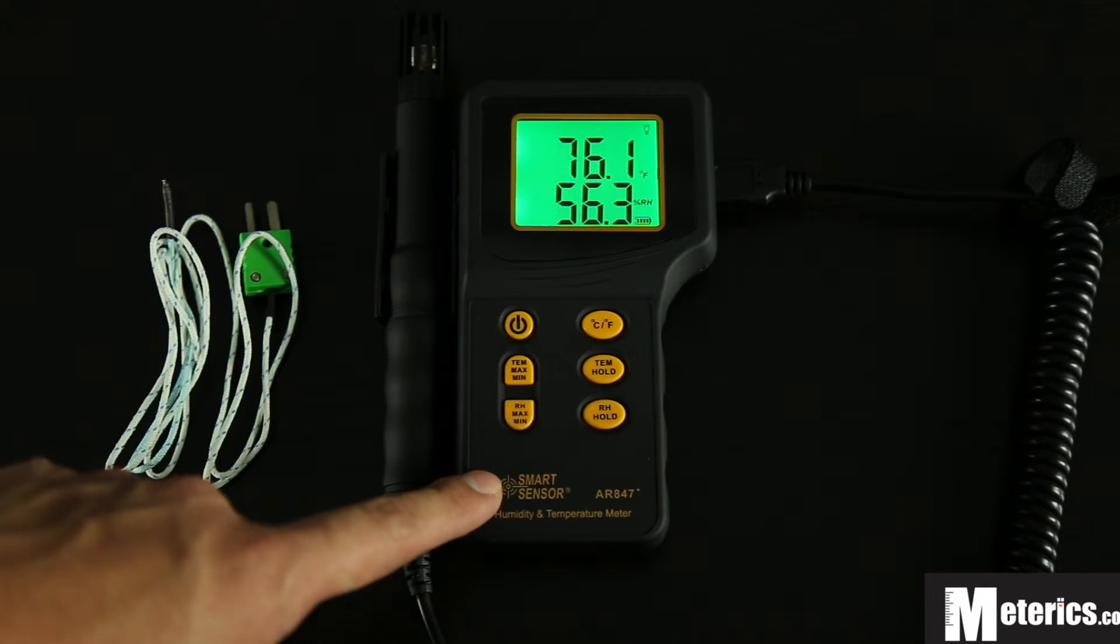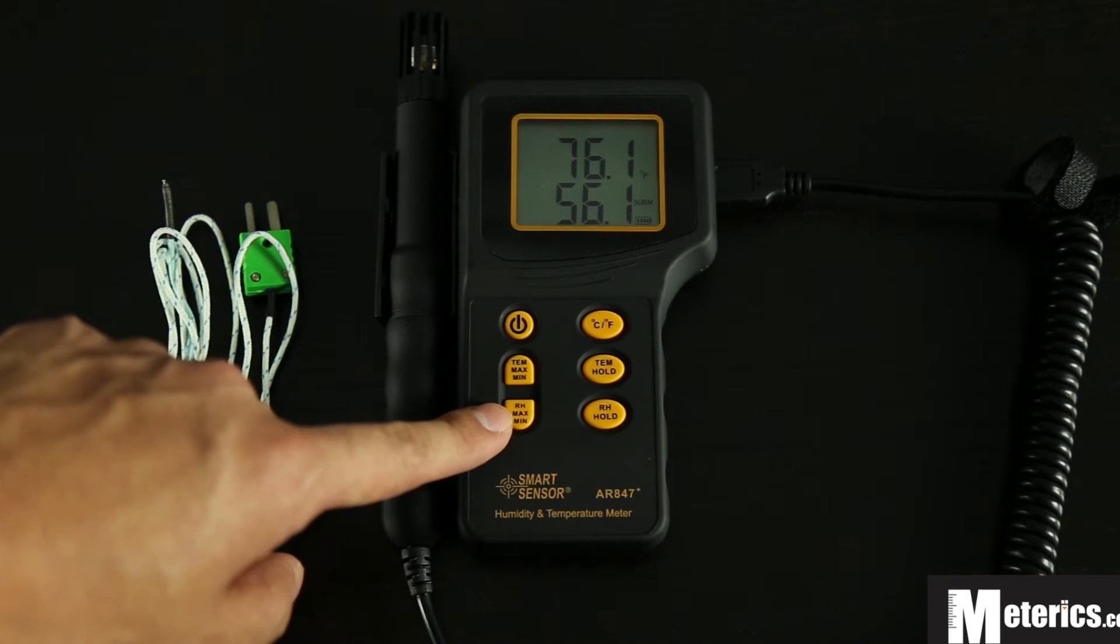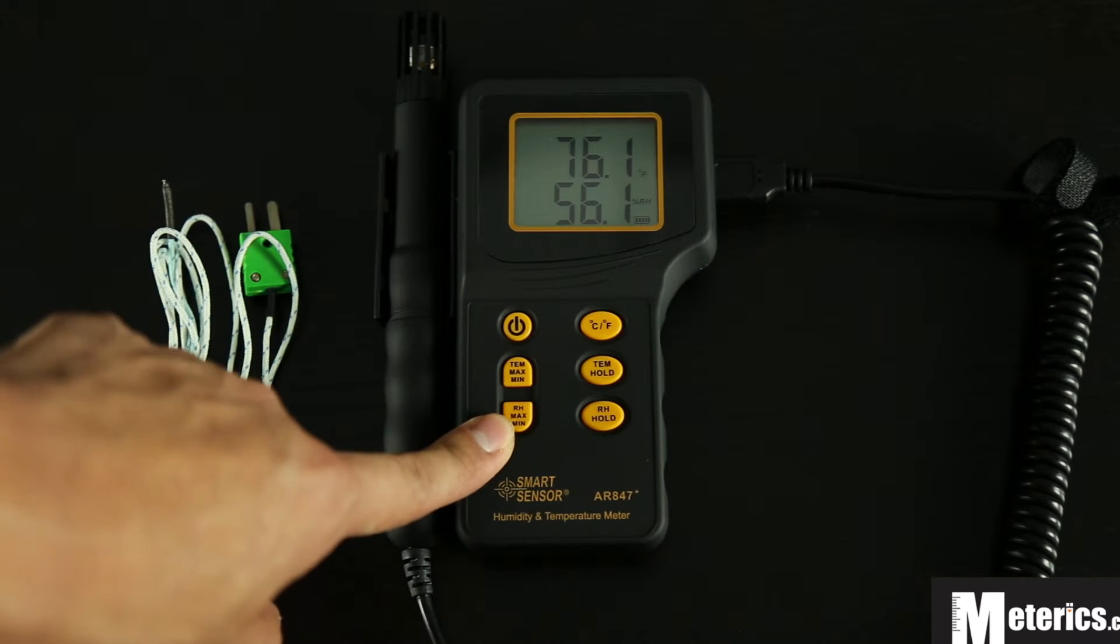This meter also comes with minimum and maximum functions. As you can see here, these two buttons are the min and max functions. The top one is for temperature and the lower one is for relative humidity.